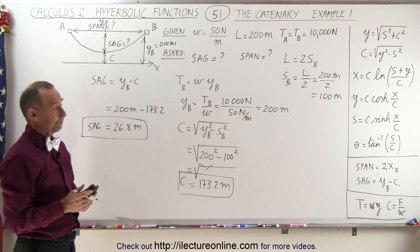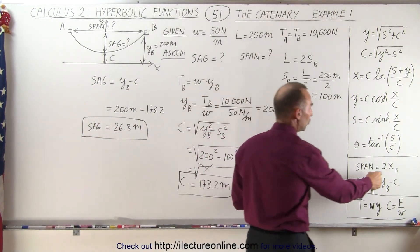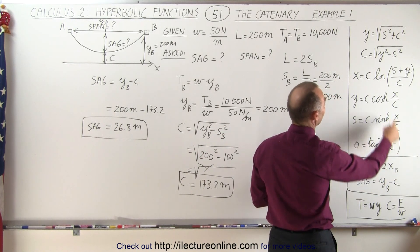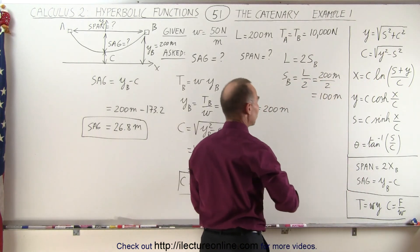Now we need to know the span. So to get the span, well let's see here, we need 2 times X sub B, so we need to find X, and X can be figured out using this equation right here. All right, let's use that equation.